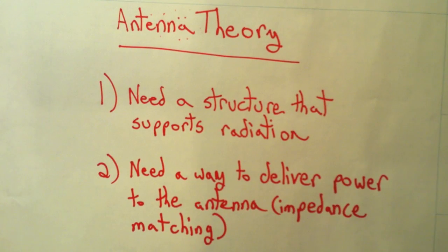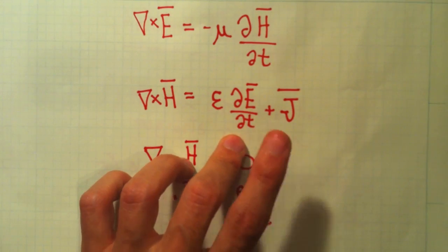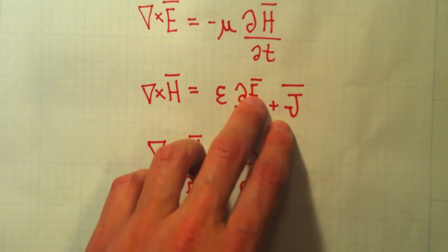Antenna theory is the discussion of how do we come up with structures that give rise to radiation? How do we get these source terms in there? And more importantly, we want the source terms in there and we don't want them to cancel out. And we also need to get power to that structure.